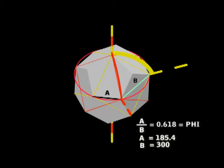Now if we divide A, which is 185.4, by length B, which is 300, we end up with the exact golden ratio.